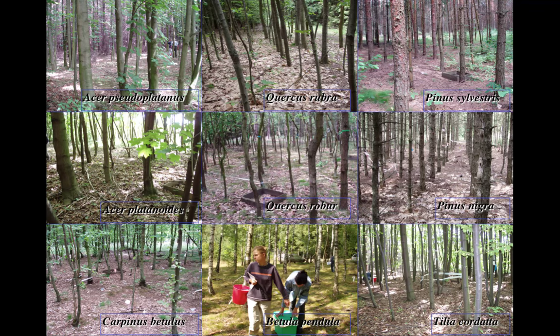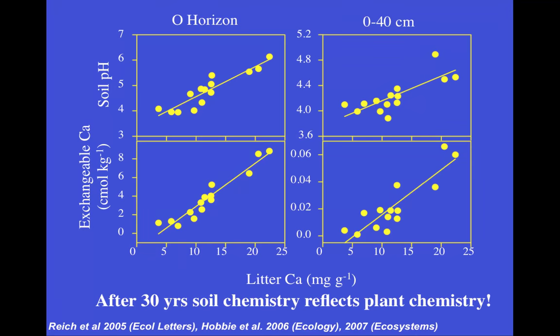So what did they find? They found a really strong effect of plant chemistry on soil chemistry. After 30 years, soil chemistry really reflected plant chemistry.